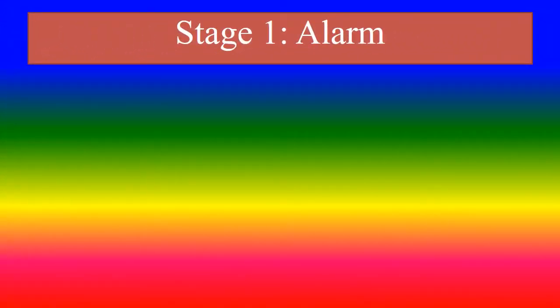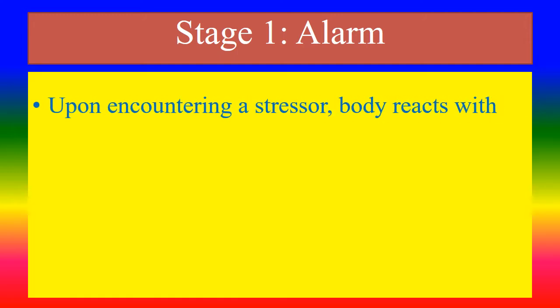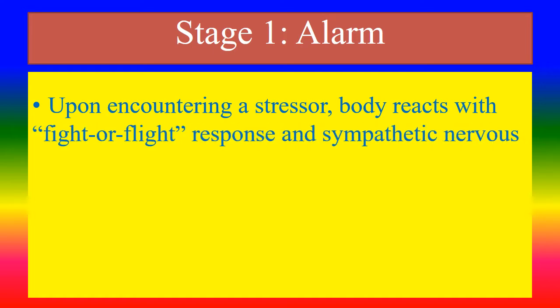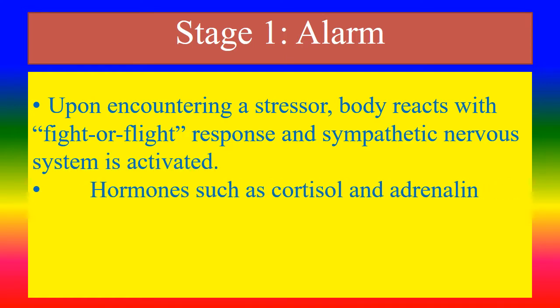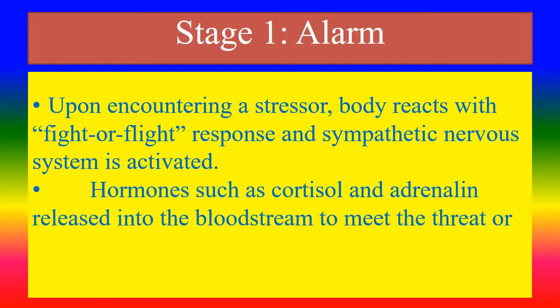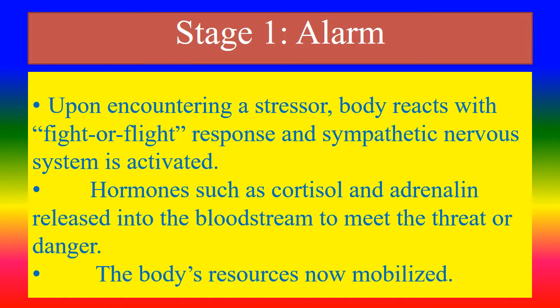Detail about each stage. Stage 1 — Alarm: Upon encountering a stressor, the body reacts with a fight or flight response and the sympathetic nervous system is activated. Hormones such as cortisol and adrenaline are released into the bloodstream to meet the threat or danger. The body's resources are now mobilized.